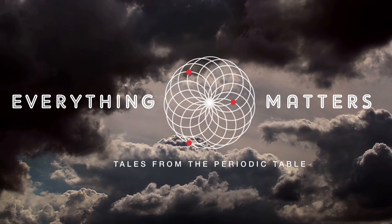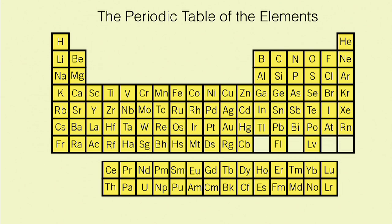All right, so this is the fifth edition of Everything Matters, which means we're talking about the fifth element from the periodic table, boron. But before we get to boron, we're going to take a step back and look at the entire periodic table of the elements and talk a little bit about where this shape comes from.